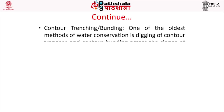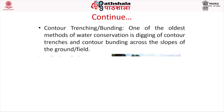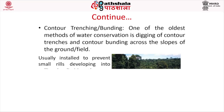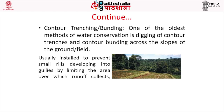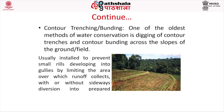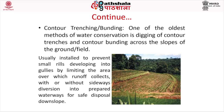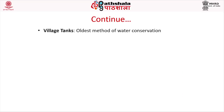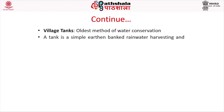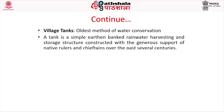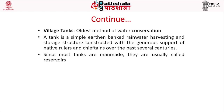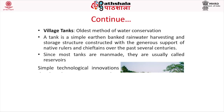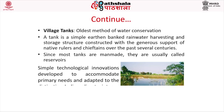Contour trenching or bunding is one of the oldest methods of water conservation, involving digging contour trenches and contour bunding across slopes of grounds or fields. They are installed to prevent small rills from developing into gullies. Village tanks are also one of the oldest methods of water conservation — simple earthen-banked rainwater harvesting and storage structures constructed with the support of native rulers and chieftains over several centuries. Most tanks are man-made and are adapted to India's distinctive climate of intense monsoons followed by protracted droughts.